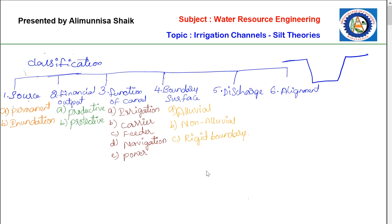A rigid boundary canal has rigid surfaces or rigid sides compared to the other two types. Here we have hard strata on its sides. When excavation is done in soil and a hard strata or rigid surface is found, it creates a lined canal — this is called a rigid boundary canal. These are the three types of canals based on boundary surfaces.